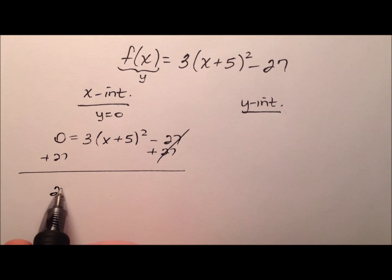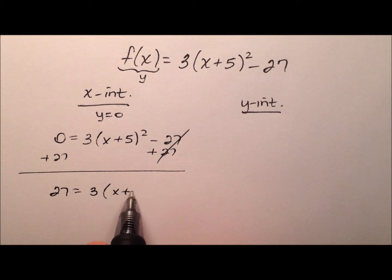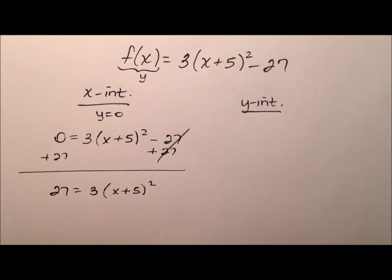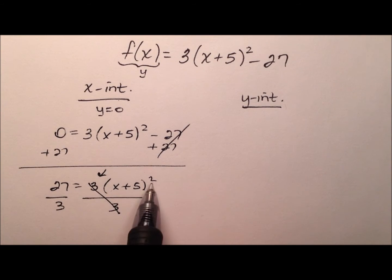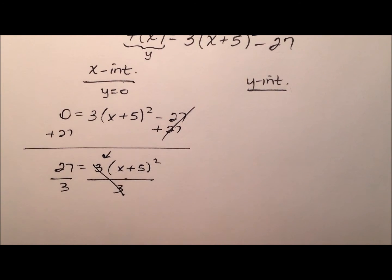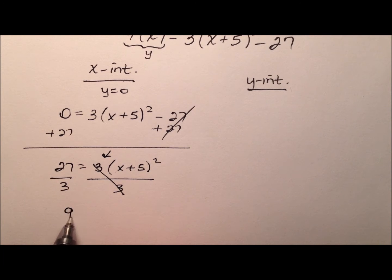So it looks like I have 27 equals 3 times this quantity that we're going to square. Well, let's go ahead and divide both sides by 3 so we can get rid of that constant out front, so we can just have this squared business on that right side all by itself.